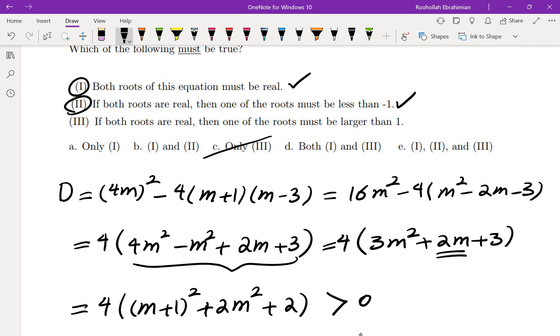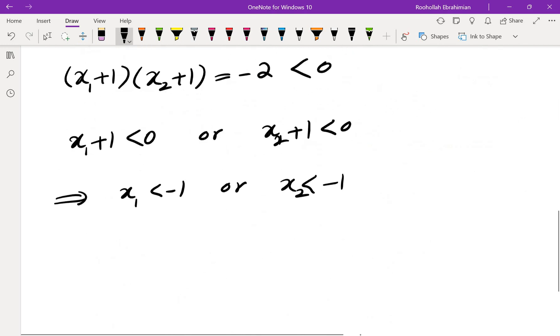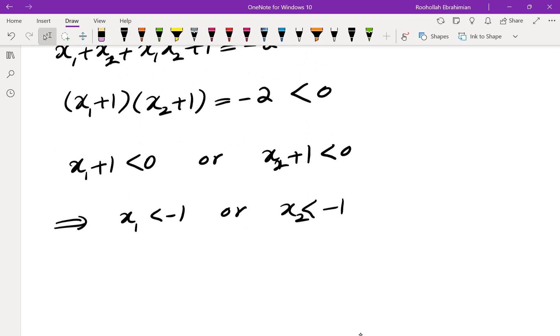Now let's look at the third one. It says if both of the roots are real then one of the roots must be larger than 1. So is that necessarily true? Well not really because you can take x₁ = 0 and x₂ = -3.